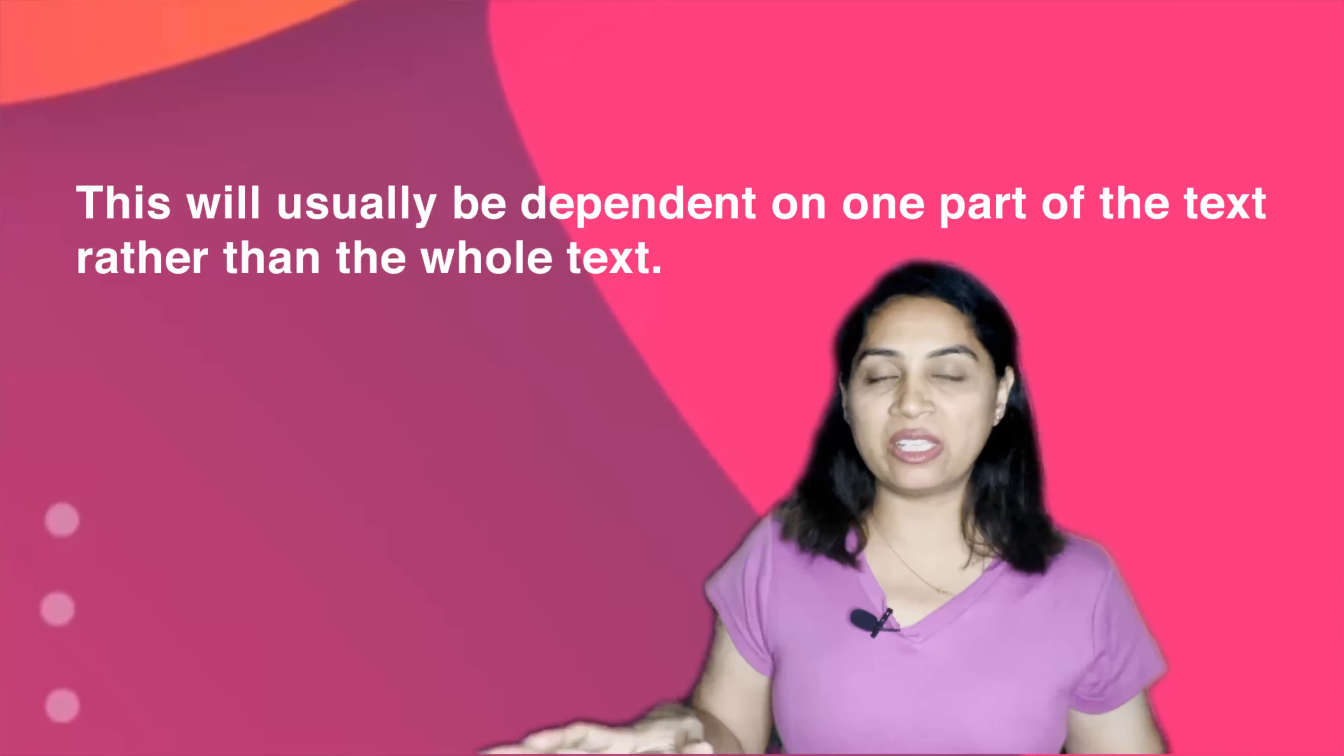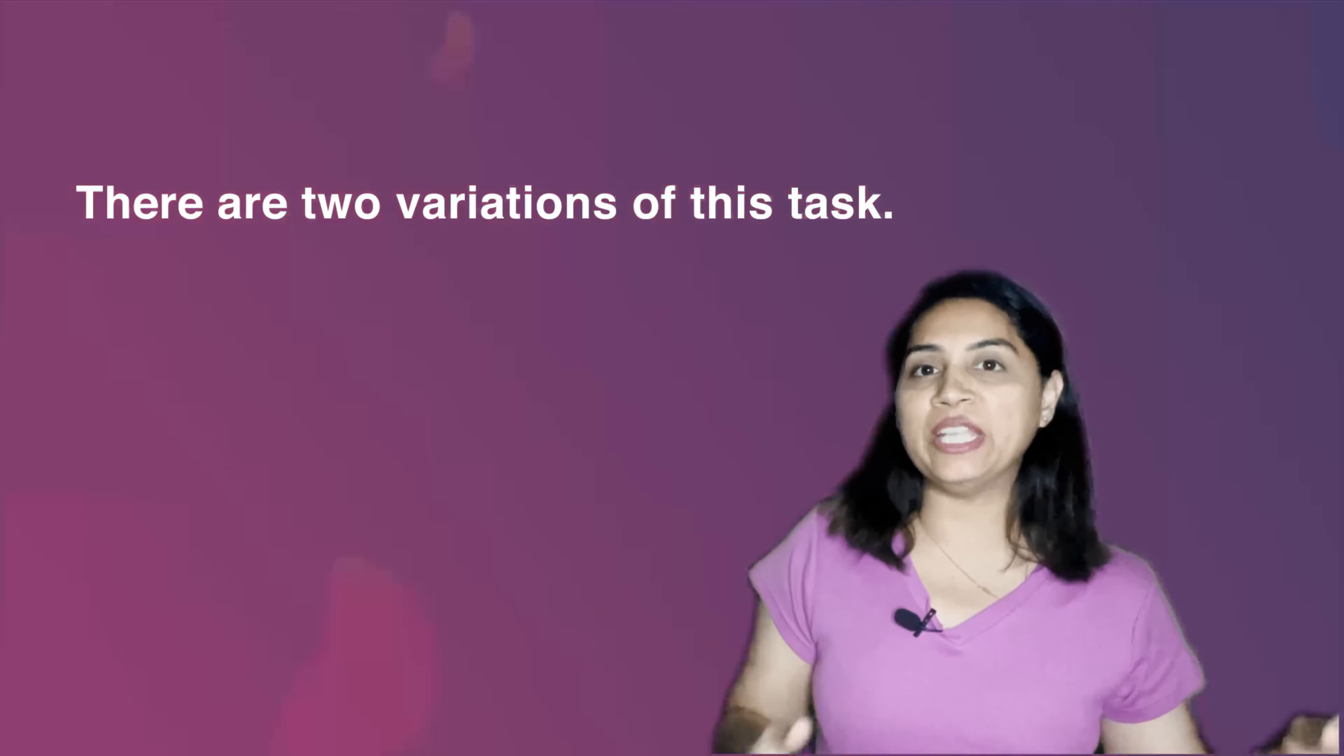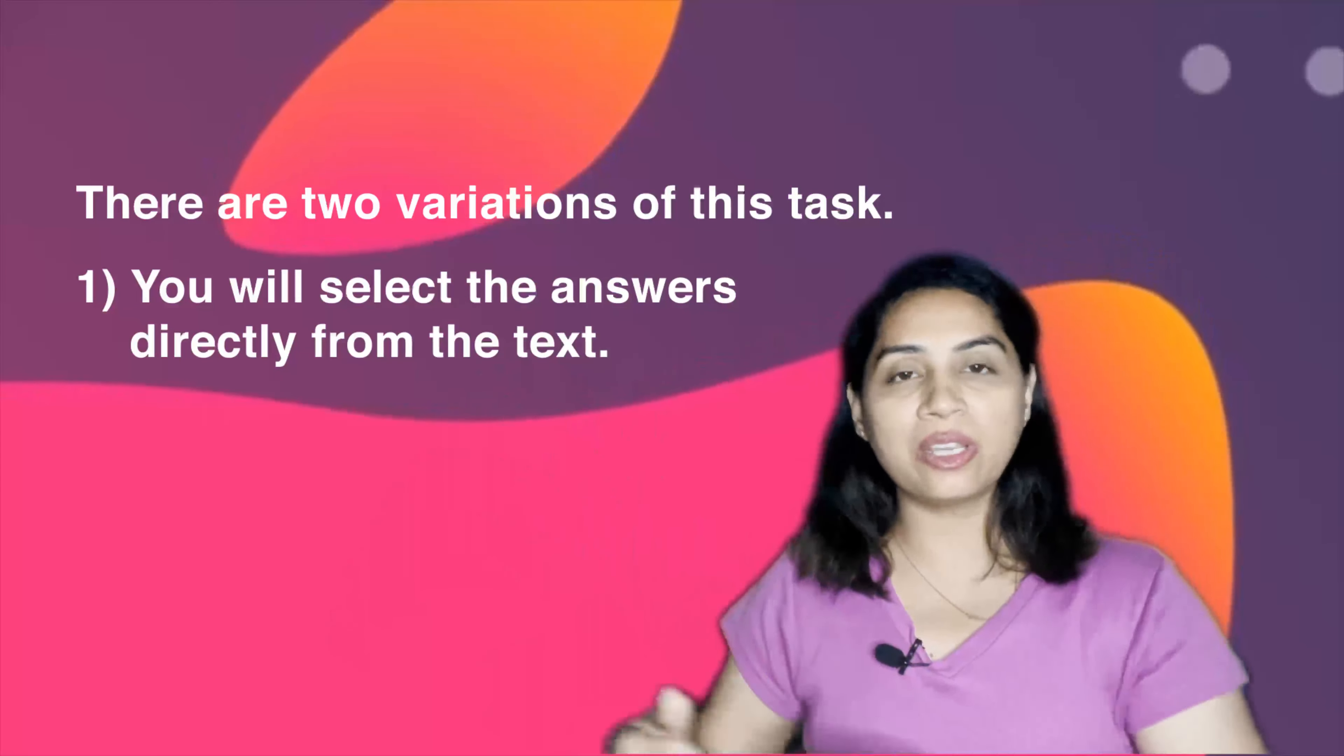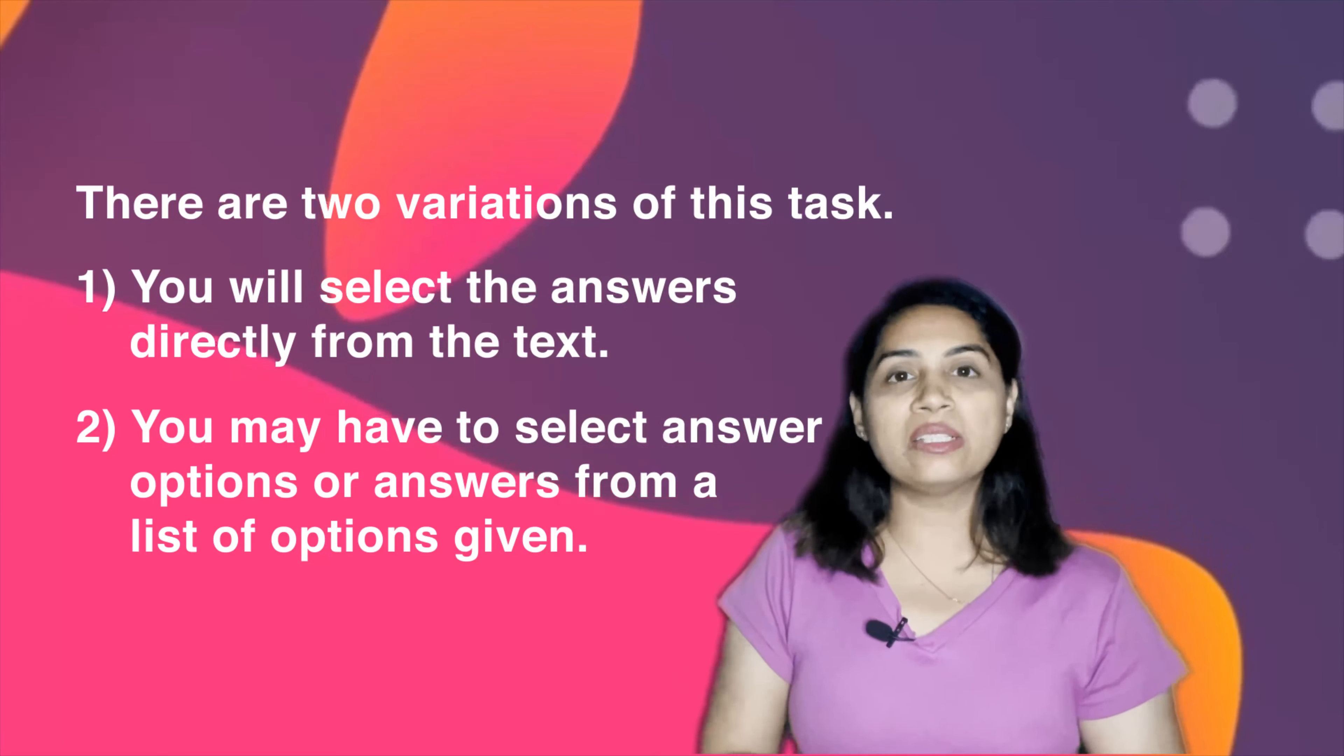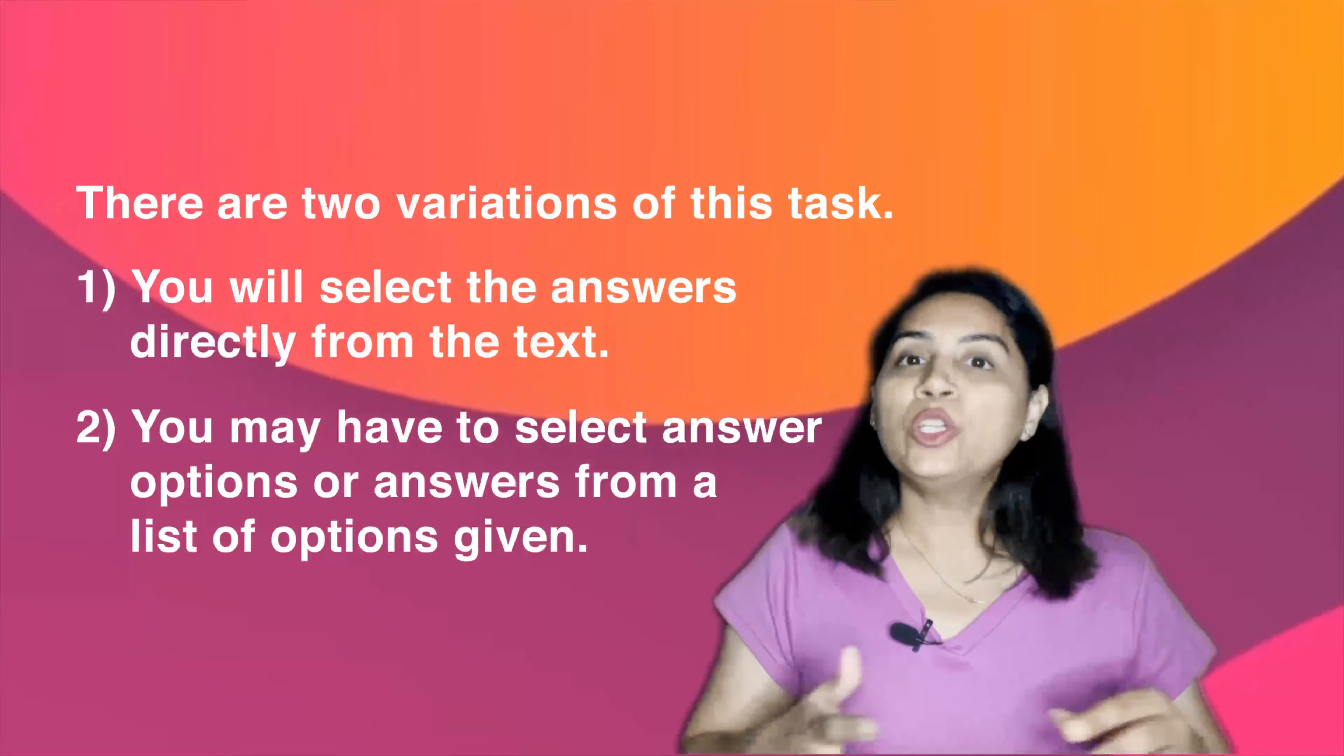There are two different variations of summary completion task. Number one, you will have to select the answers directly from the text. Number two, you may have to select the answer options or let's say the answers already given as list of options. Today we are going to understand the first variation of summary completion task, that is without suggested options.